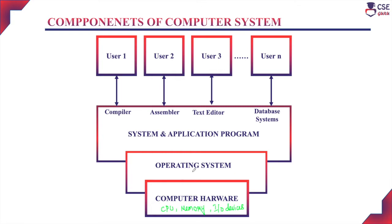Considering the operating system: the user will run specific applications, and whenever a resource is required by the user, the operating system will allocate the resources efficiently. The operating system acts as an intermediary between the computer hardware and the user. Popular examples include Apple Mac OS, Microsoft Windows, and Linux.